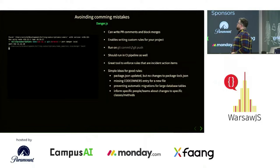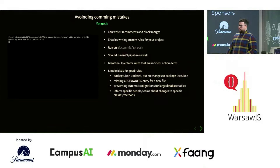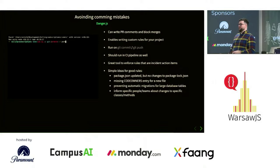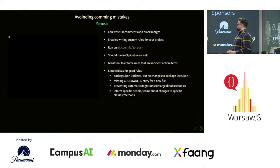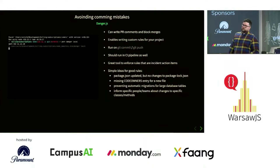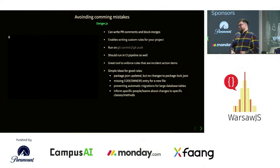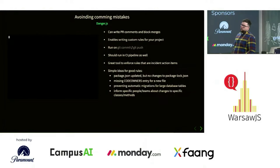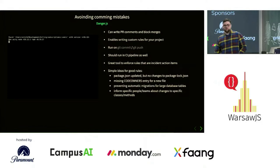Run those tools on git commit, git push, and on the pipeline. Disable PR merges if checks fail. Automate everything — every single tool that you have, automate it. Make sure that everyone has it and that it's impossible or at least very hard to skip. That way nobody will try to bypass it, and if they do, they'll have a good talk with their manager.